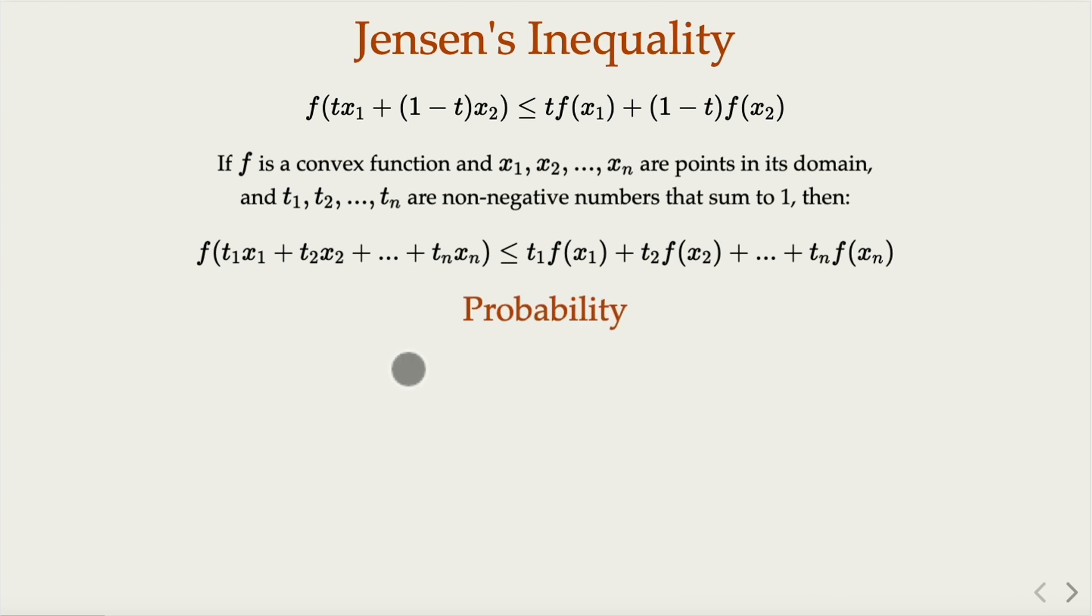When you learn probability, you may see a different form of similar idea. That is, if you have random variable X, and if the function f is convex, then the function value of the expected value of random variable X is going to be less or equal to the expected value of the function value of the random variables, f(X). So this, you're going to encounter this in probability study.